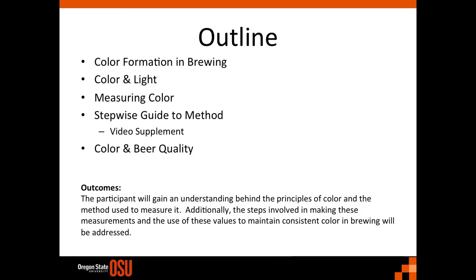Here is an outline of what we will be covering today. We will start by discussing briefly color formation during the brewing and malting process, then we will discuss the physics behind light. This will set the stage for our discussion about measuring color. Outcomes for this module are that the participant will gain an understanding behind the principles of color and the methods used to measure it.